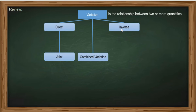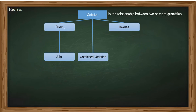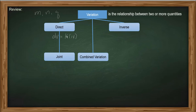Now, what is the equation that represents each type? We will make use of the variables M, N, and Q instead of X, Y, and Z. For direct variation, we have the dependent variable DV equal to K, the constant, times the independent variable IV. For example, M is equal to K times N, which is read as M varies directly as N. This means that as we increase N, M also increases.